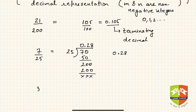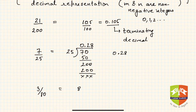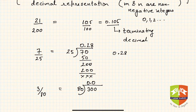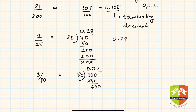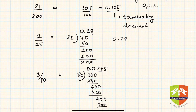Let us take one more example: 3 upon 80. Performing long division: 80 goes into 300 three times giving 240, remainder 60; then 80 times 7 is 560, remainder 40; then 80 times 5 is 400. So 3 upon 80 gives us a terminating decimal representation.